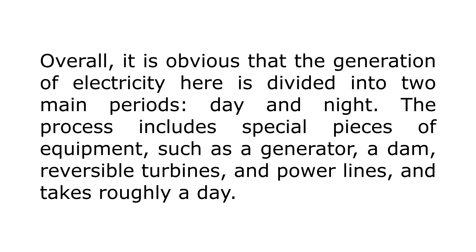For the overview, write: 'Overall, it is obvious that the generation of electricity is divided into two main periods: day and night.' We have mentioned the two clear sets of stages. Then add: 'The process includes special pieces of equipment such as a generator, a dam, reversible turbines, and power lines, and takes roughly a day.' We have mentioned equipment and time — roughly 24 hours, or you can write 'roughly a day.'